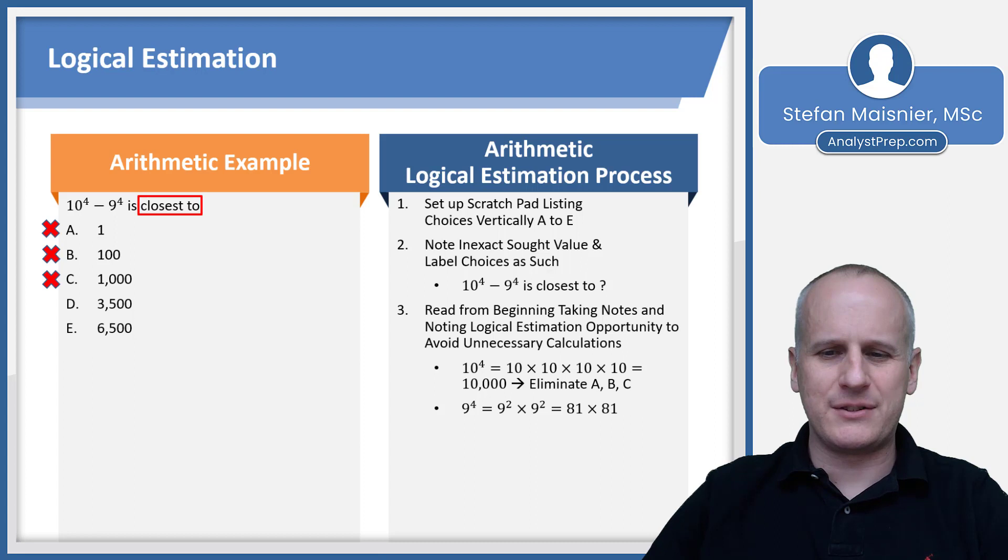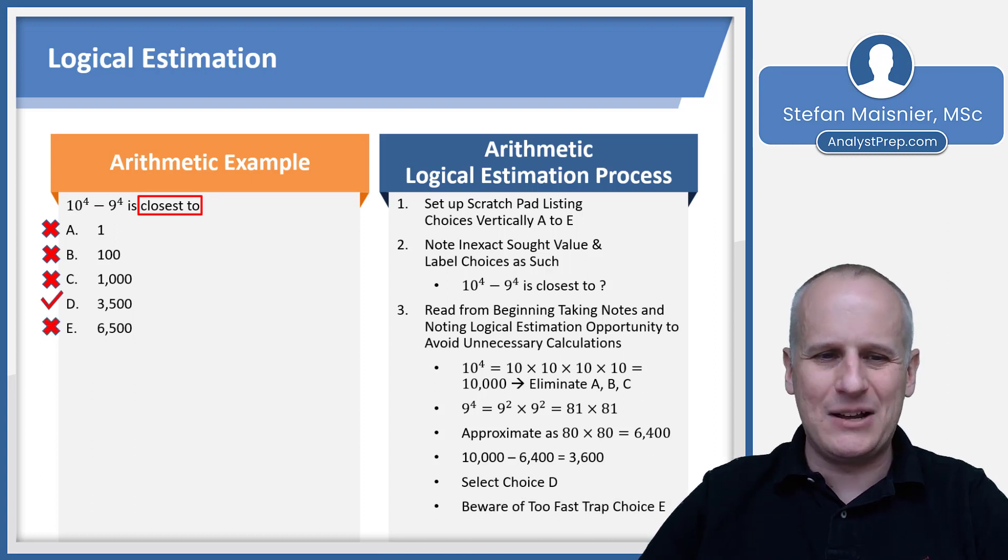Then we've got 9 to the fourth, which is going to be 9 squared times 9 squared, so 81 times 81. And I'm just going to estimate that as 80 times 80, which would be 6,400. So it's got to be a little bit more than 6,400, but I have to be aware of the trap because it's going to be around 3,600. But it's D because it's the subtraction, not E, which would be if I was too fast, I might accidentally pick that because I figured out what 9 to the fourth was roughly. So remember, always write out what the question is asking so you try to avoid those traps that are constantly laid in the exam.